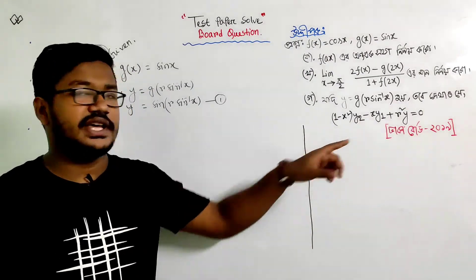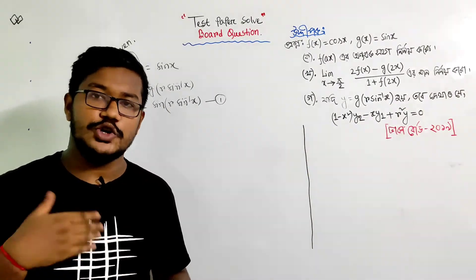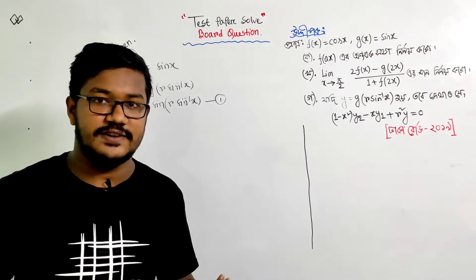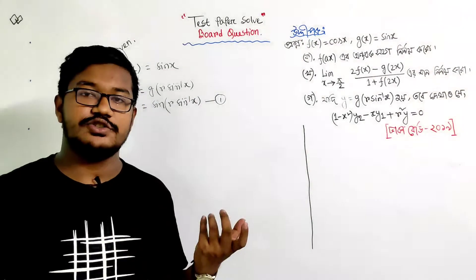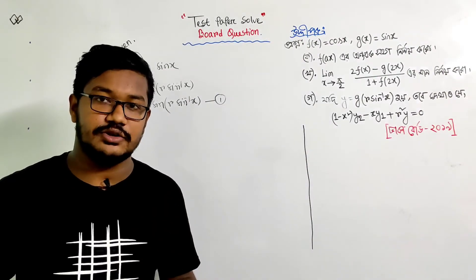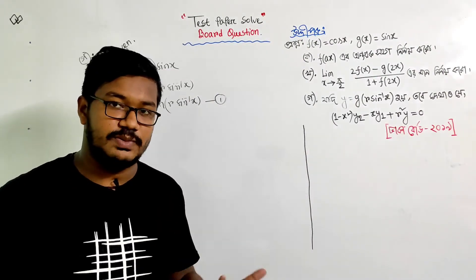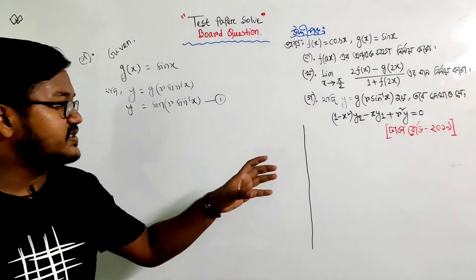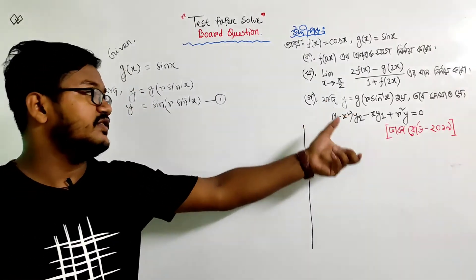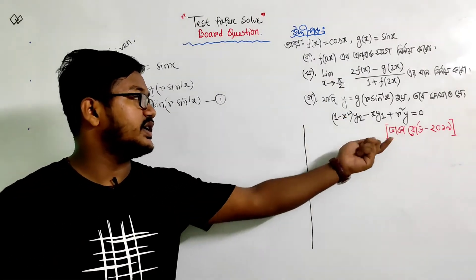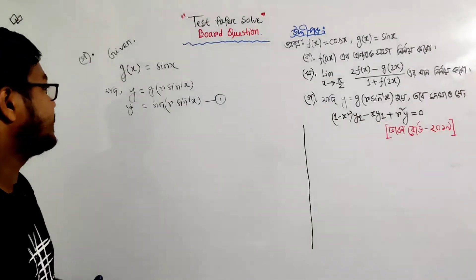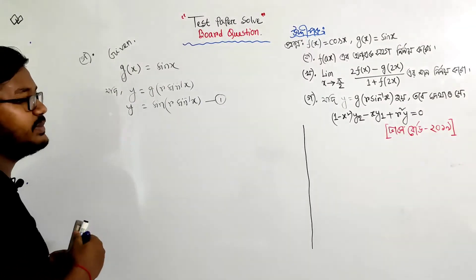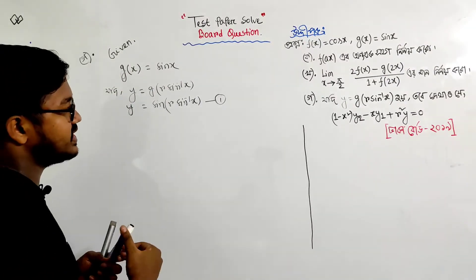We need to find y1 and y2. We have to differentiate. So (1 - x²)y2 minus x·y1 plus r²·y equals 0. We need to find the values of y1 and y2.